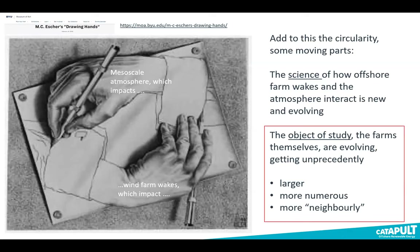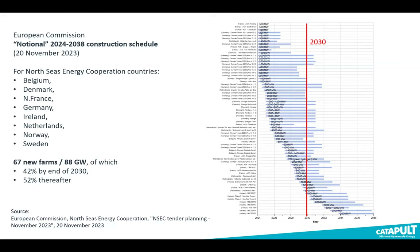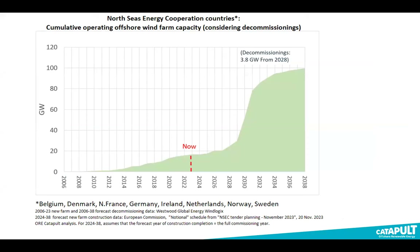Just published a week ago by the European Commission, they released a construction schedule. I took the data for construction end periods as a rough proxy for commissioning, combined with historical baseline data for existing capacity from Windlogics database, including decommissioning estimates, to get a running tally of how much capacity would be in operation at any given time. If you believe this is going to happen, we've only just begun.